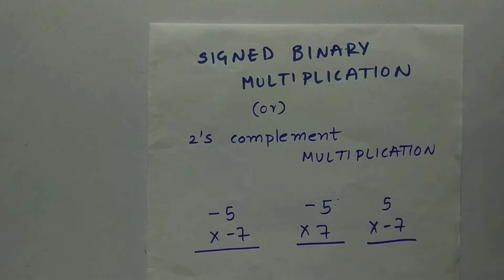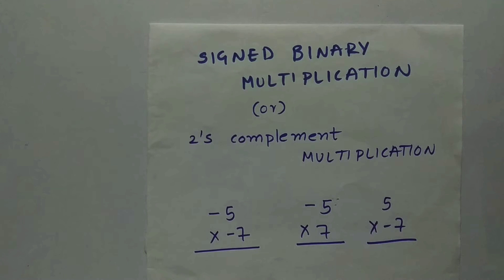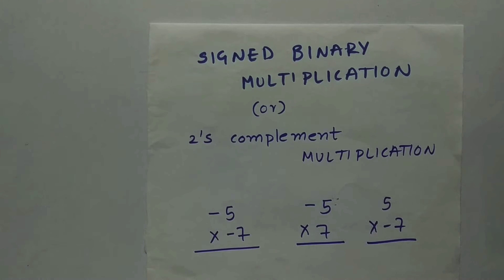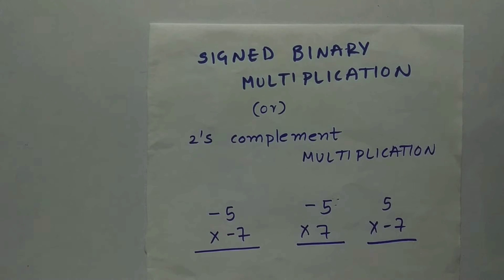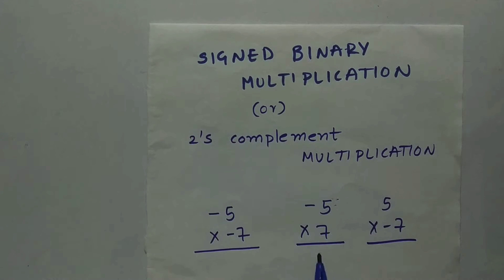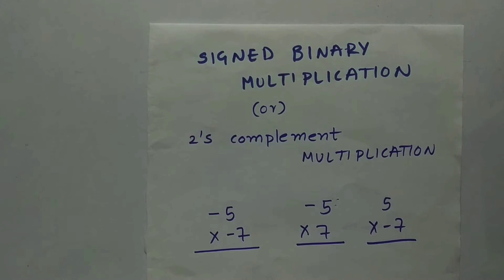Hey guys, welcome back to another interesting topic. Today's topic is about signed binary multiplication, or two's complement multiplication, where I'm going to tell you how to multiply two binary numbers which have a sign. Here are a few examples I've considered to explain in this video: minus 5 times minus 7, minus 5 times 7, and 5 times minus 7.